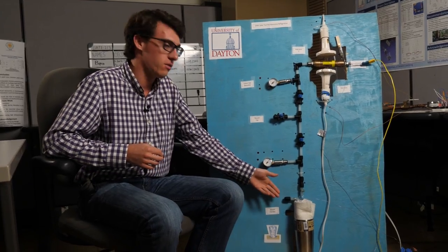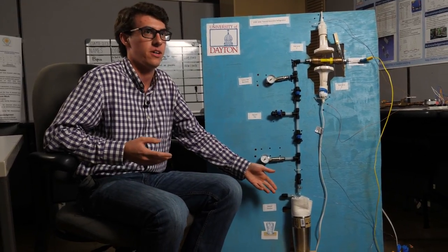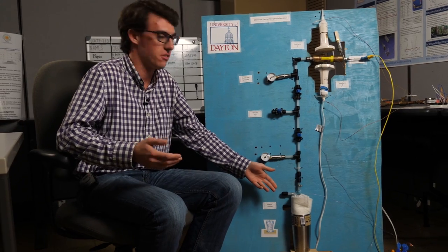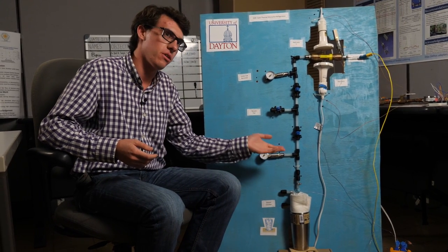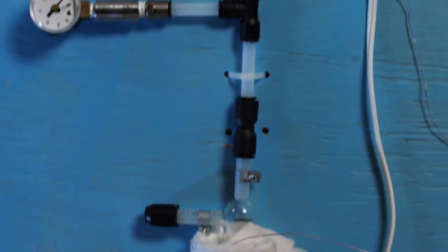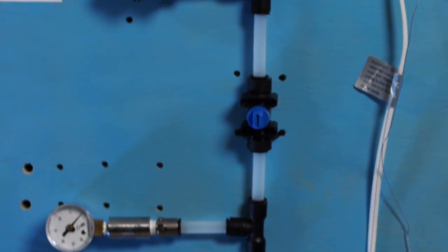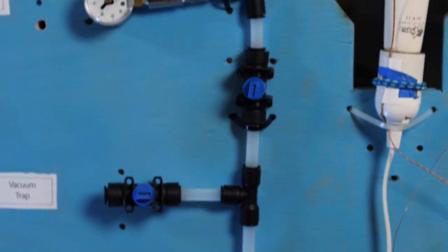We start out with liquid ethanol which is the same kind of alcohol that's in a beverage or gasoline. This evaporates at very low pressures so it evaporates at a low temperature which means we can carry heat away from this evaporation chamber.